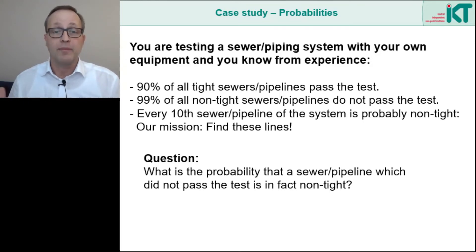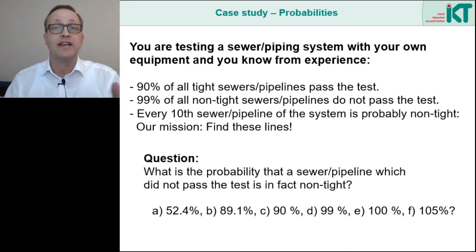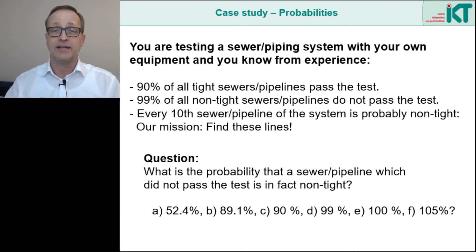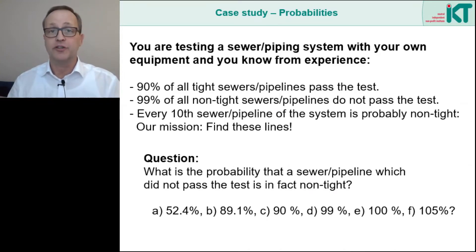For the results, I give you a few suggestions: Is it only 52.4%, or is it 89.1%, 90%, 99%, or even 100%? Just stop the video and think about the possible solutions. Have you decided? Well, the correct solution is A — 52.4%. So actually 50-50. That means that in this case, half of all failed tests are actually on tight sewers. And of course that sounds unacceptable. But how can it be explained?